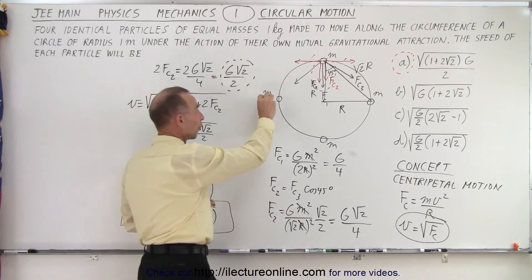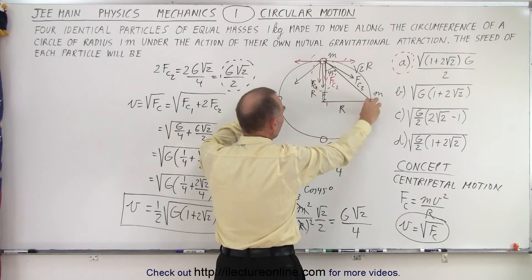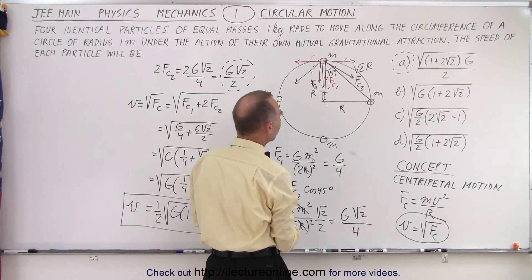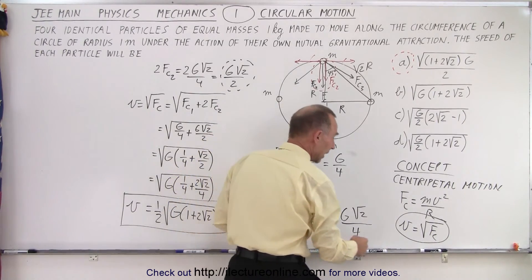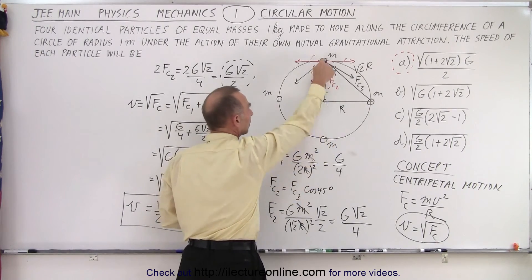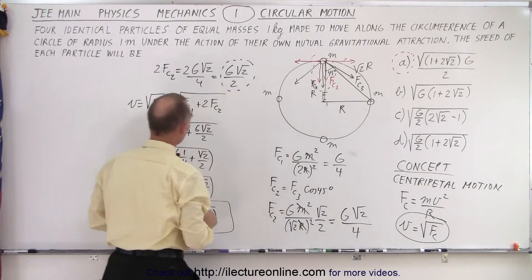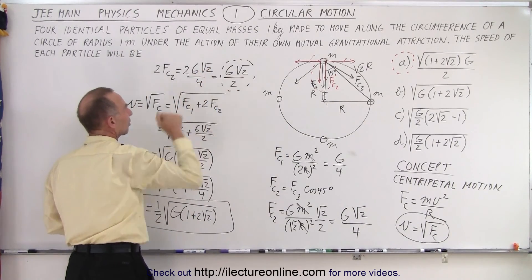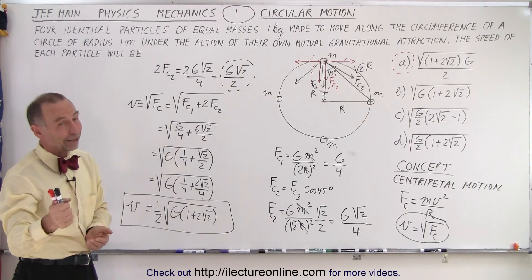So again, we have four particles acting on each other through mutual gravitational force. Because of that, they feel the same force in all directions, placing them equidistant from one another. The radius is 1 meter, the masses are 1 kg, so r and m cancel to 1. The concept is centripetal motion: centripetal force equals mv²/r, so v equals the square root of the centripetal force. To find it, we calculated FC1 between the opposite pair (G/4), and the component from each adjacent pair — multiplying by cos(45°) — giving G·√2/4 each, for a total of G·√2/2. Adding them all together gives us the final velocity.